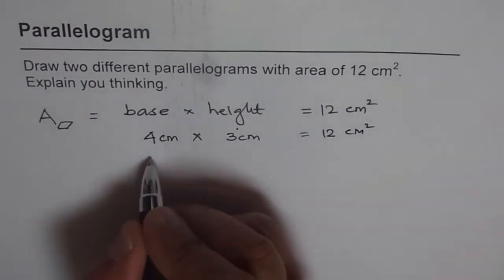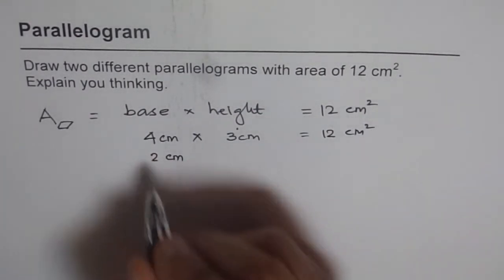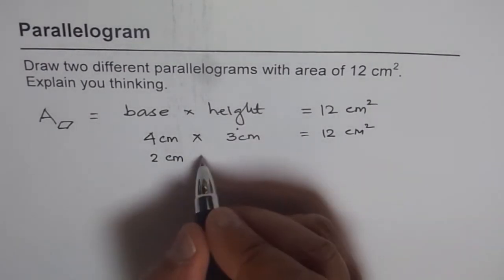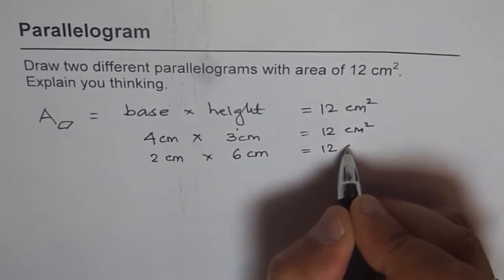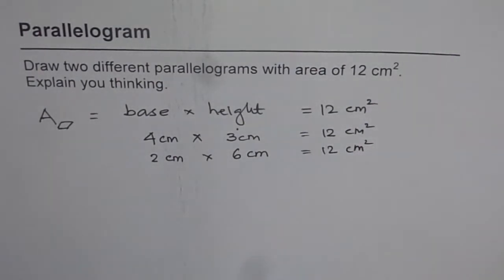How about 2 and 6? If I have 2 cm of base, that is half of this, but twice the height, that means 6 cm, then also I get 12 cm². Perfect. So let's try to draw it and see what do we get.